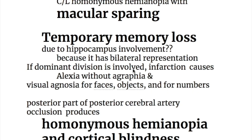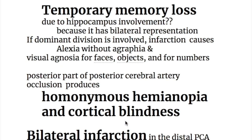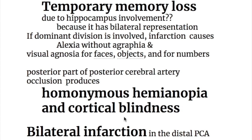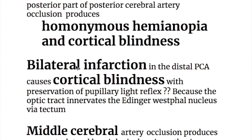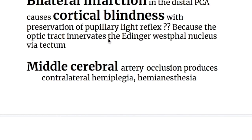If the dominant division is involved, infarction causes alexia without agraphia and visual agnosia for faces, objects, and numbers. The posterior part of the posterior cerebral artery occlusion produces homonymous hemianopsia and cortical blindness. Bilateral infarction in the distal posterior cerebral artery causes cortical blindness with preservation of the pupillary light reflex, because the optic tract innervates the Edinger-Westphal nucleus via the tectum.